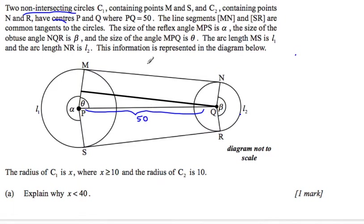The line segments MN and SR are common tangents to the circles. That's important. That means these angles here, tangents to circles, meet at 90 degrees from your circle theorems. The size of the reflex angle is α, and the size of the obtuse angle is β. The size of angle MPQ is α. The arc length MS is L1, and the arc length NR is L2.